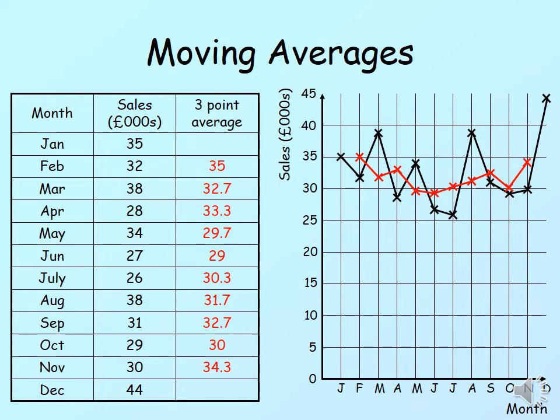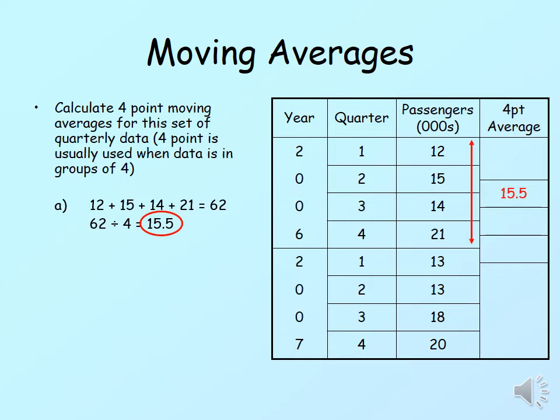Moving on, I've got a few examples for you to do. Here we are going to be doing what's called a four-point moving average, where you have to add up four figures. The first four figures are 12, 15, 14 and 21, and that adds up to 62. If we divide that by four, we get 15.5, and that is slotted in there.